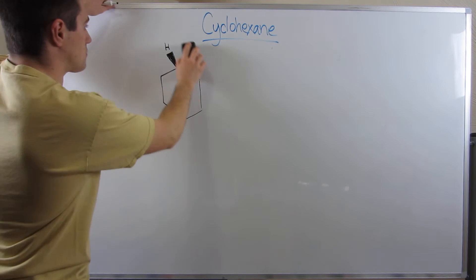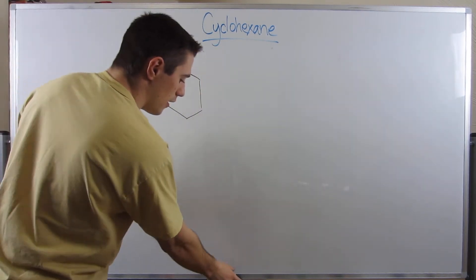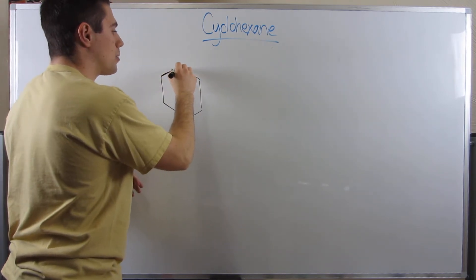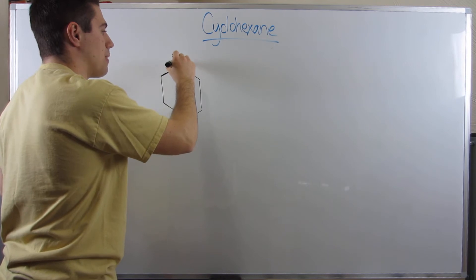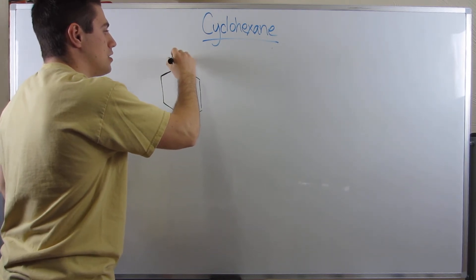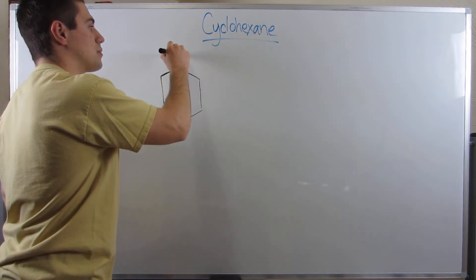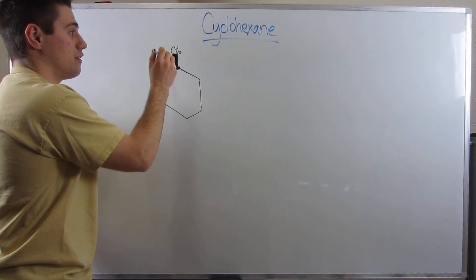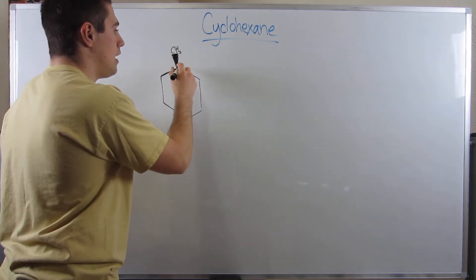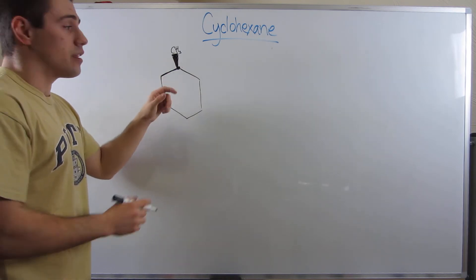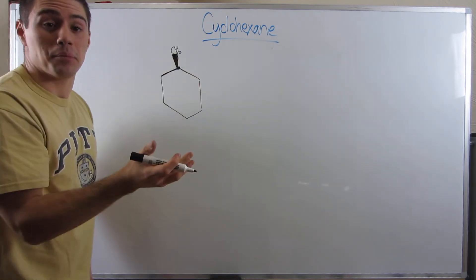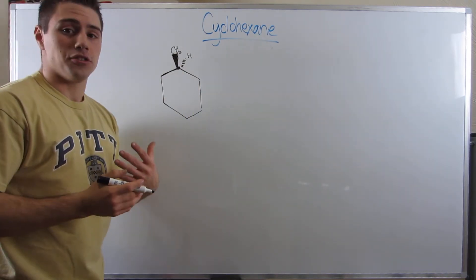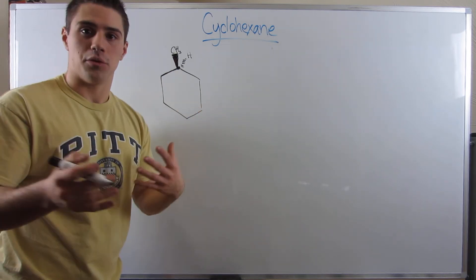So wedges mean above the ring; dashes mean below the ring, or through the plane of the board. Knowing that, I'm going to draw a ring and then draw it on a cyclohexane chair. On this carbon I'm going to draw a wedged methyl group. If you ever see this, the methyl group (CH3) is above the plane of the page. Some people don't even fill in the dashed hydrogen — it might be implied — but I will, so we have a dashed hydrogen as well.